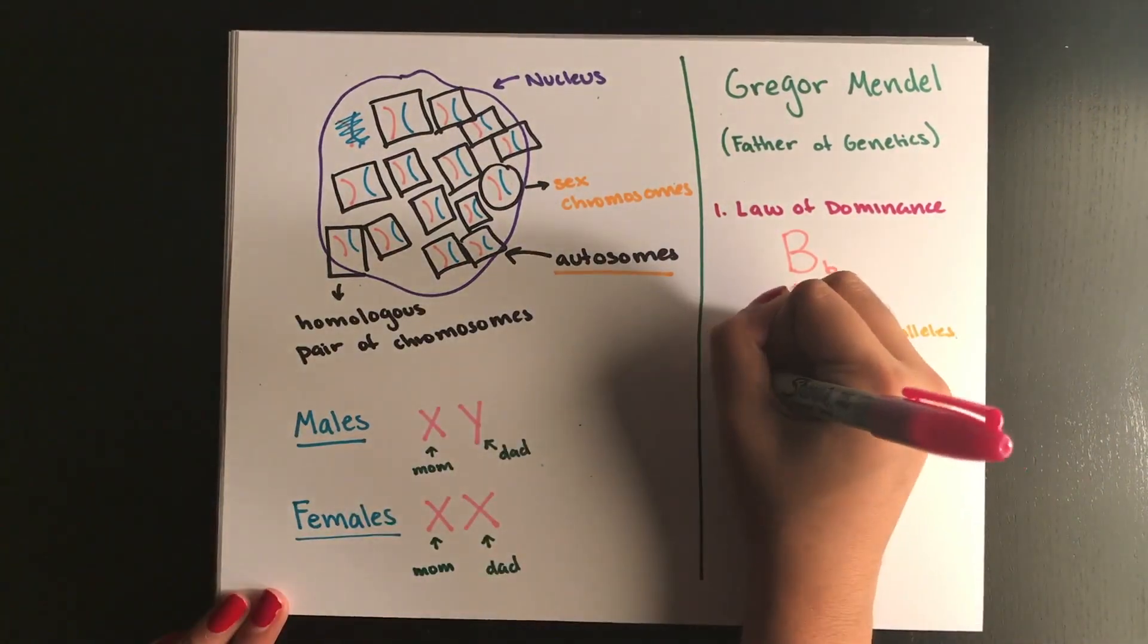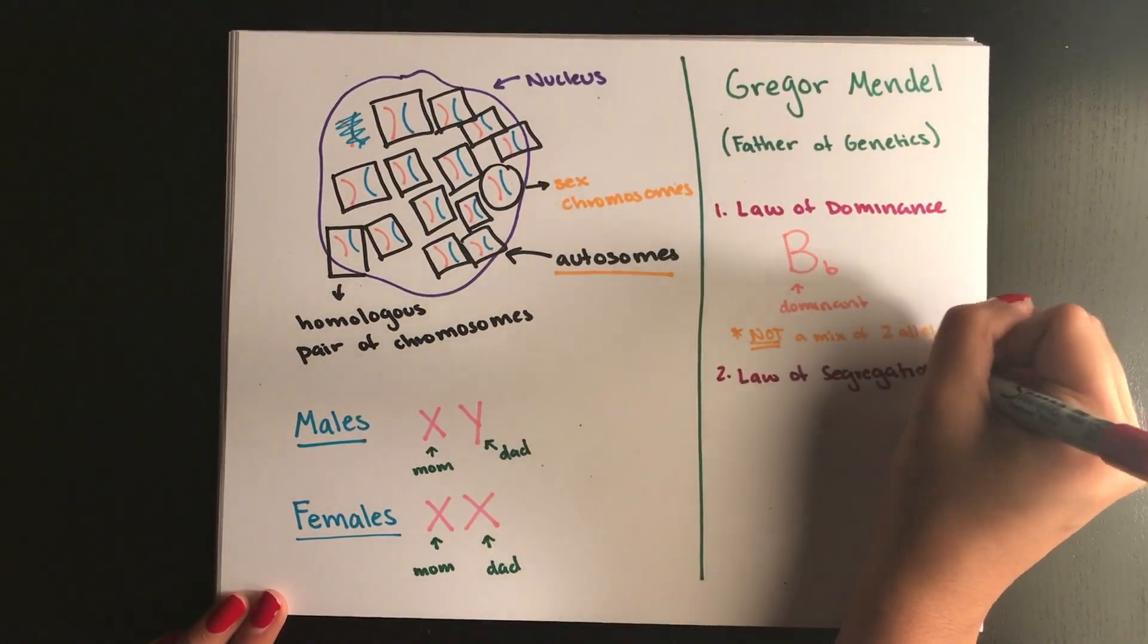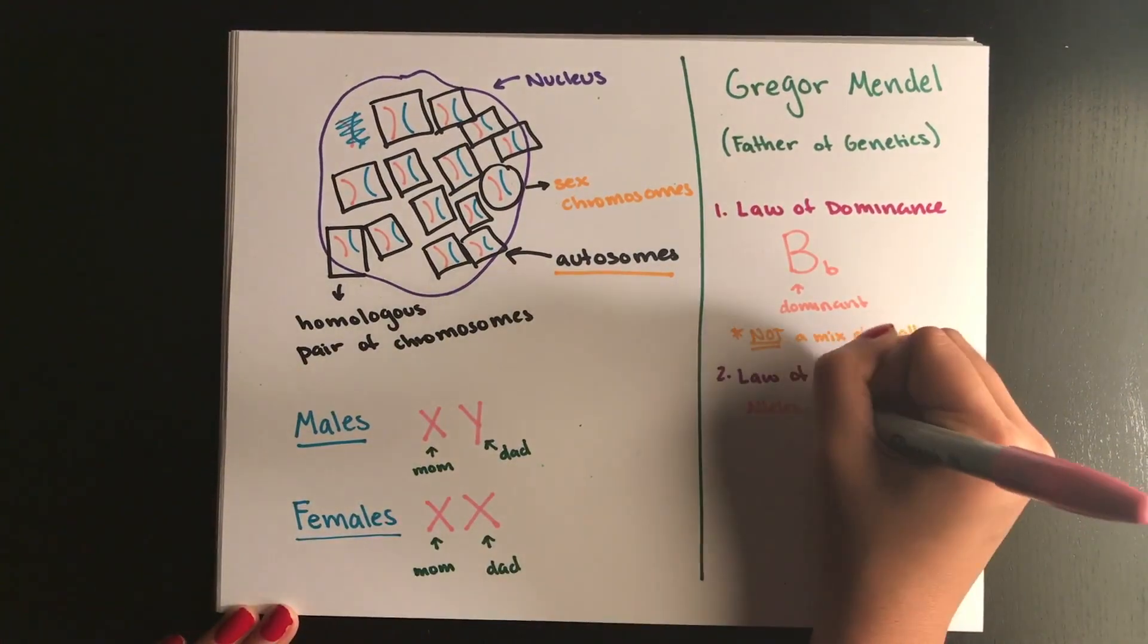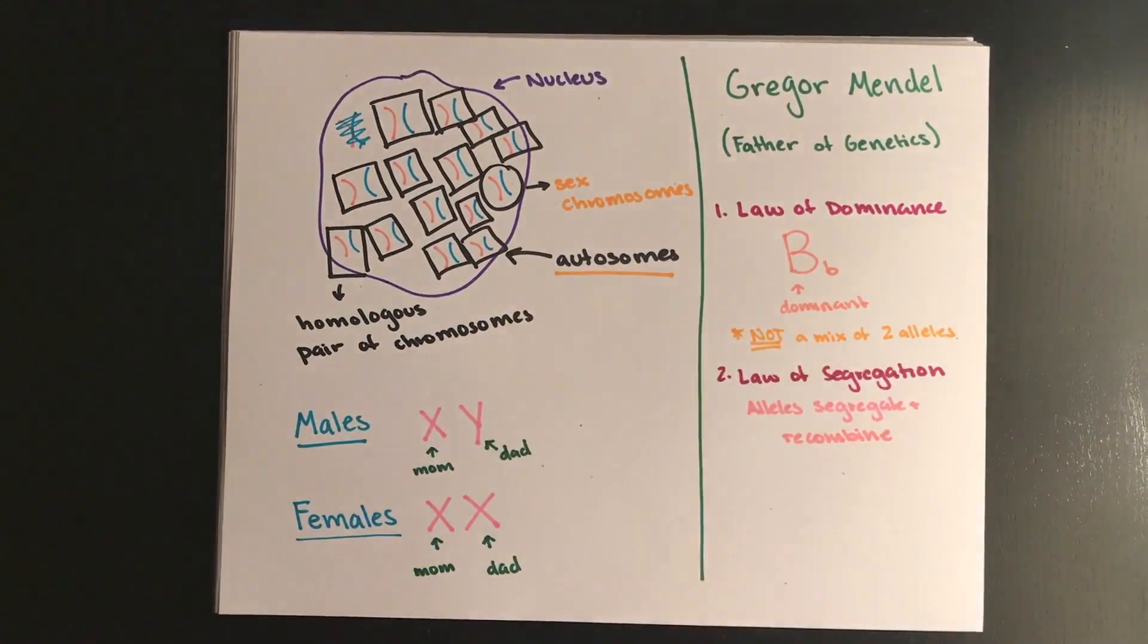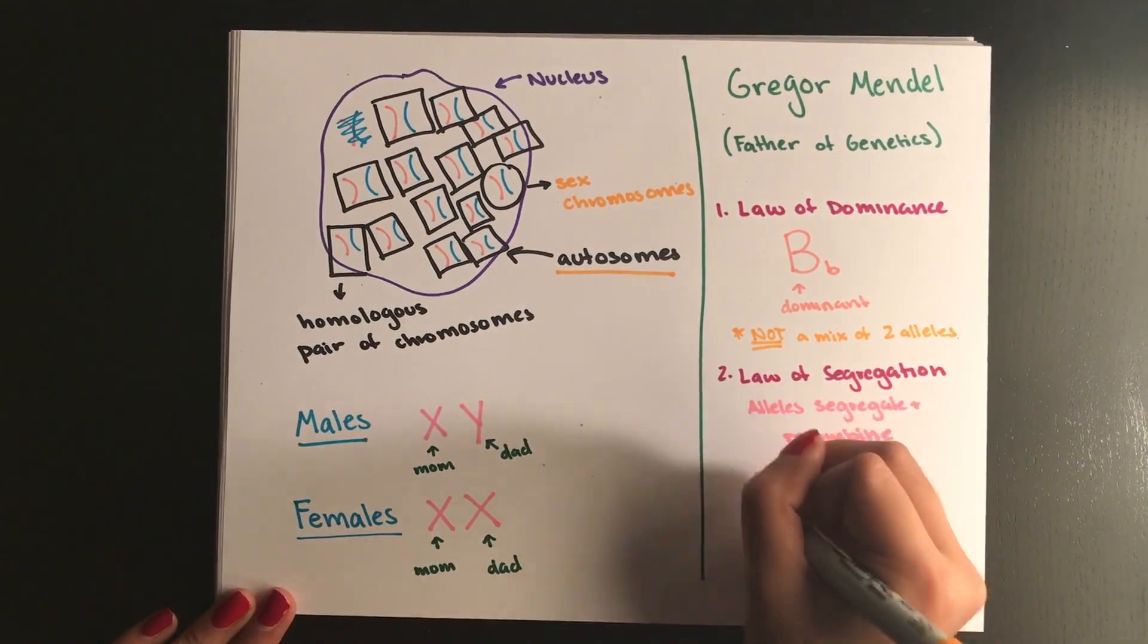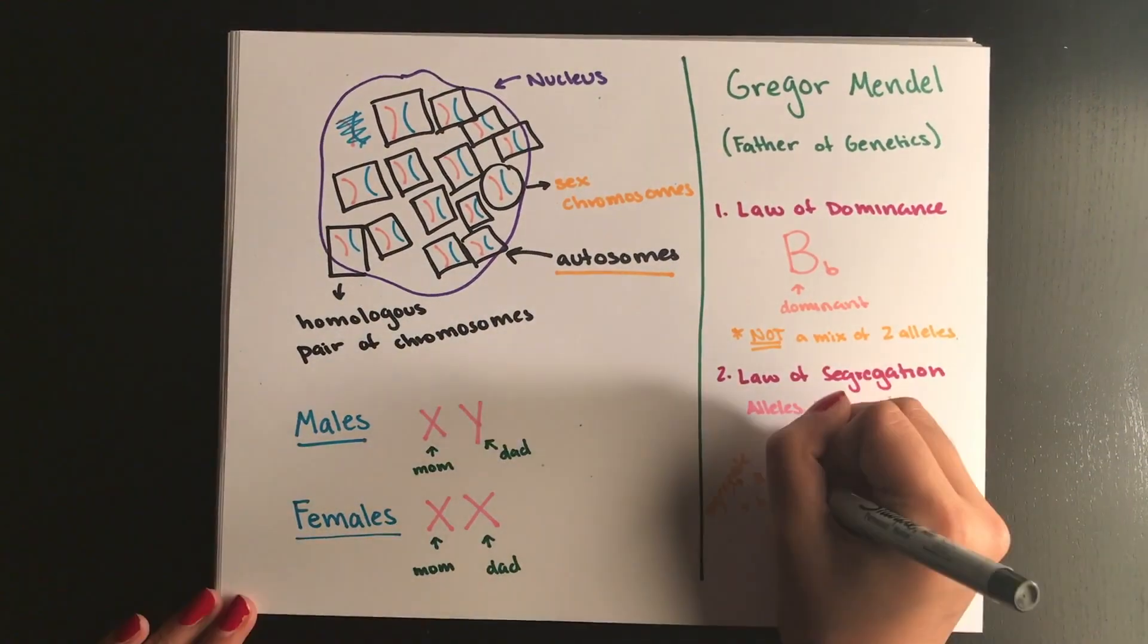Next is the law of segregation which states that alleles will separate and recombine during the cross, kind of just like the way we construct a Punnett square. We separate the alleles out and then they recombine together.